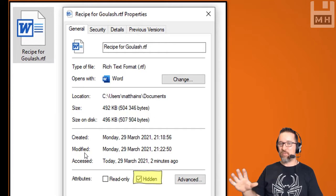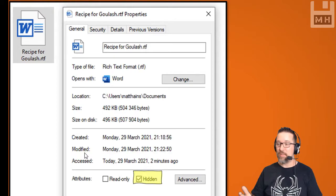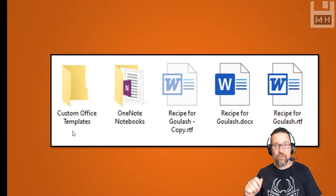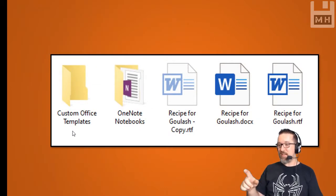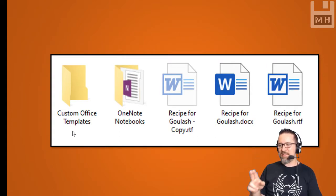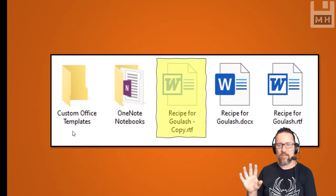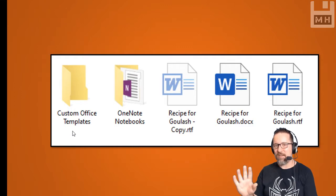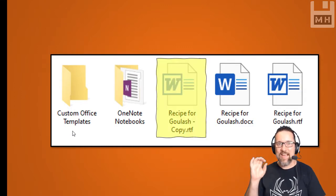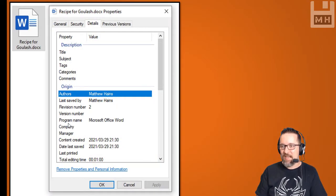I can also make the file hidden. If I make it hidden, then when I open the folder that this file is in, I will not see it — it will be invisible. You need to know how to show hidden files in order to see them. If you do show hidden files, you'll notice the file looks slightly faded out, which means it is a hidden file.